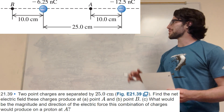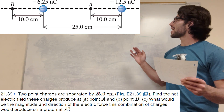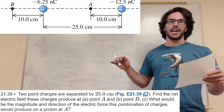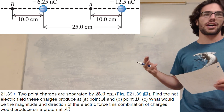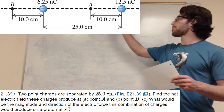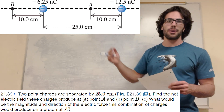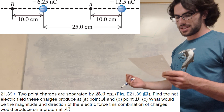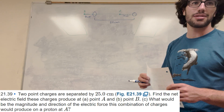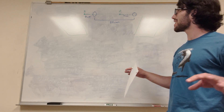What's up Cal Gang? So we have this problem here. We have these two charges on the line, and it's a three-parter. It wants us to find the electric field that these charges produce at point A, at point B, and then for part C, find the combination of the forces when you put a proton at A. So let's get started.